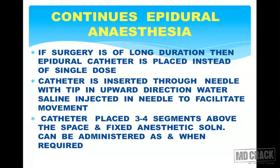That was the single-shot epidural procedure. For continuous epidural anesthesia, used when surgery is of long duration — such as total cholecystectomy or Whipple's operation — an epidural catheter is placed instead of a single dose. The procedure is the same: once you appreciate the loss of resistance, you insert an epidural catheter. The catheter is inserted through the needle with the tip in an upward direction.